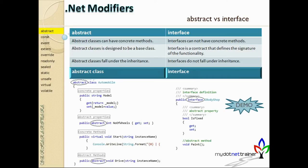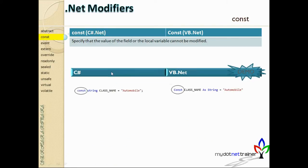The next miscellaneous topic is constants. Constants are straightforward. A constant is declared using the const keyword in C# and cannot be modified once initialized.